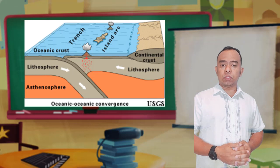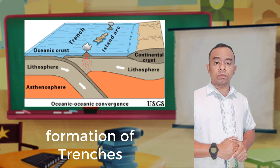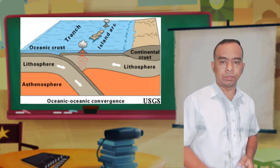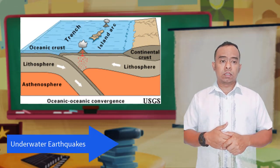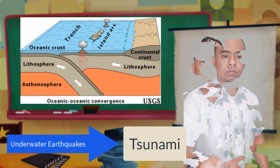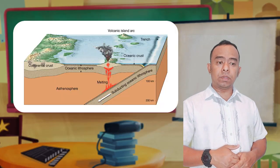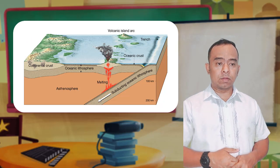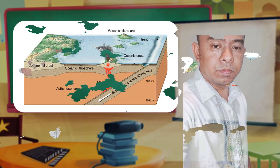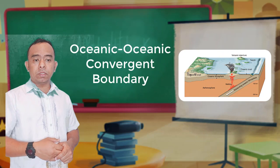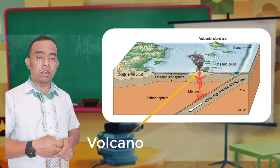Converging oceanic plates will cause the formation of trenches, and these trenches will become sources of earthquakes. Underwater earthquakes, especially the strong ones, can generate tsunamis. In the convergence of two oceanic plates, the leading edge of the subducted plate will eventually reach the mantle, causing it to melt and turn into magma. The molten material will rise to the surface, creating a volcanic island arc parallel to the trench.